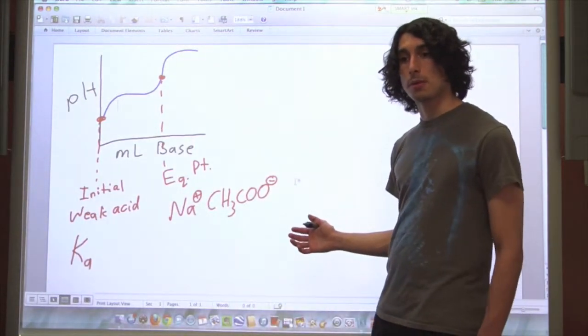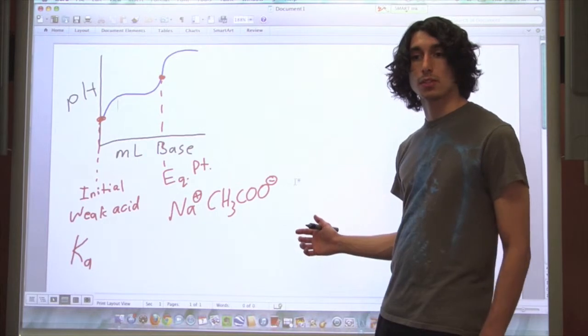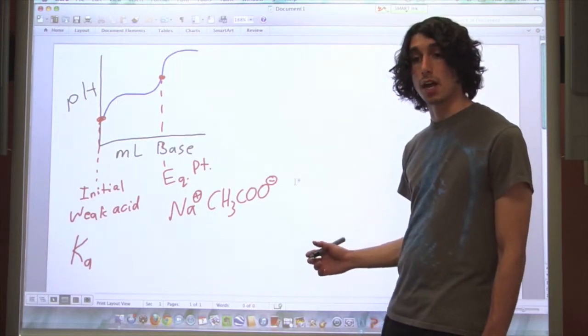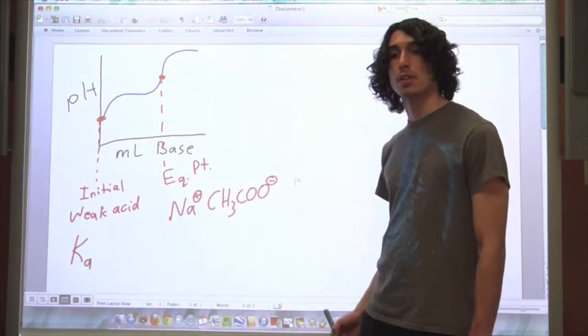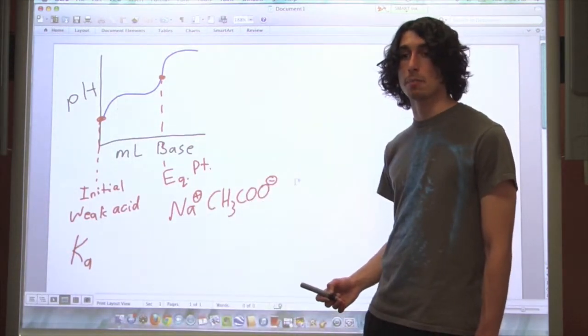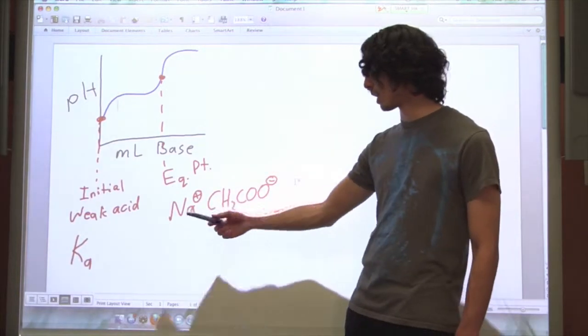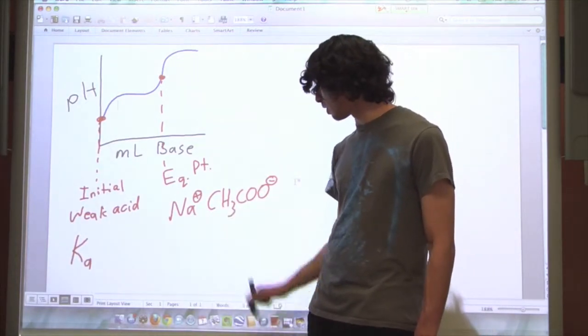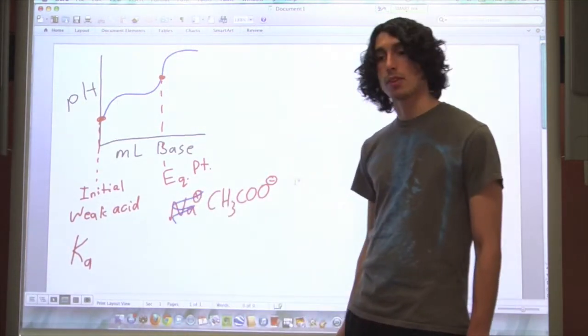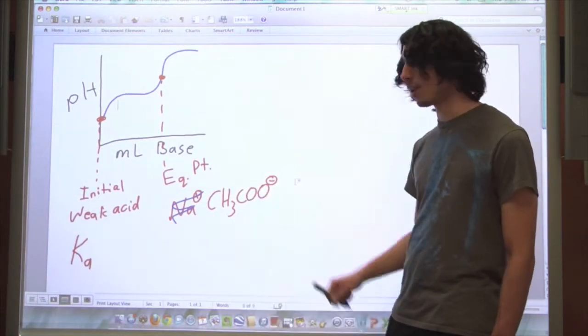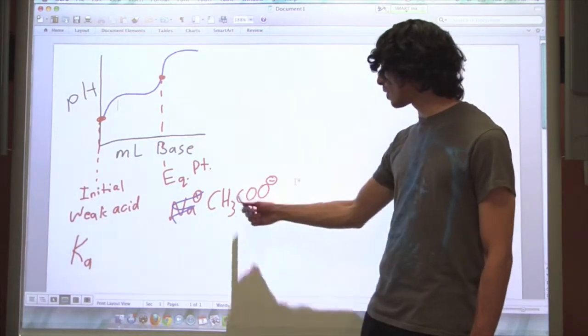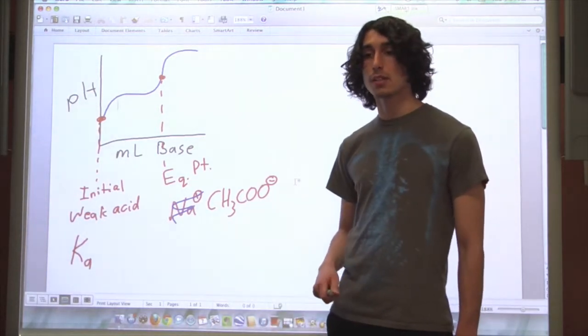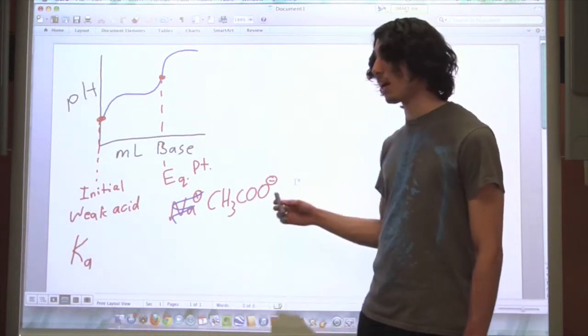So if you've talked about salts in solution having a pH that is not neutral, then you already know how to solve this problem. You know that sodium, the conjugate acid of a strong base, is going to be a very weak acid. So essentially, it does nothing. Acetate, on the other hand, is the conjugate base of a weak acid, which is a weak base. So this can react with water to produce hydroxide ions and acetic acid.